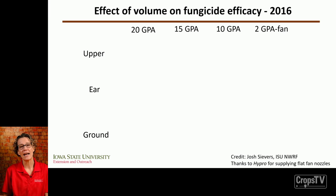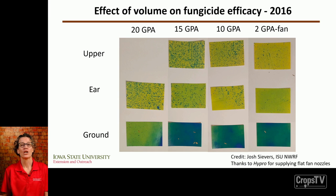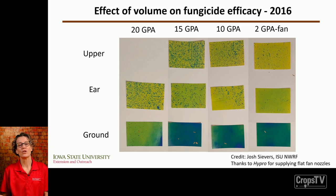We put yellow cards in the upper canopy, at the ear leaf, and at the ground, and applied fungicides at different volumes. At the ground level there was a lot of moisture, but in the upper canopy, no matter what volume was used, we had the most spots indicating fungicide deposition. At the ear leaf we had fewer spots, and at ground level very few — indicating not a lot of fungicide reaches those lower leaves.